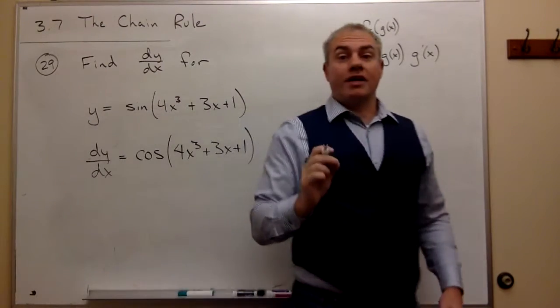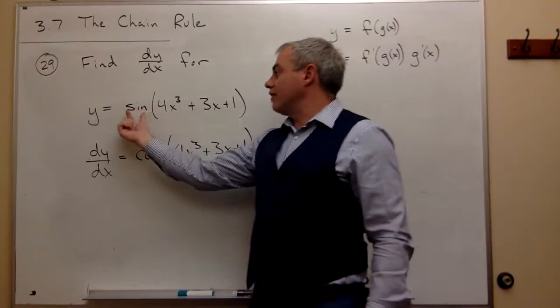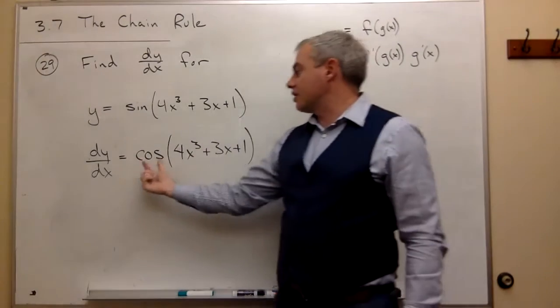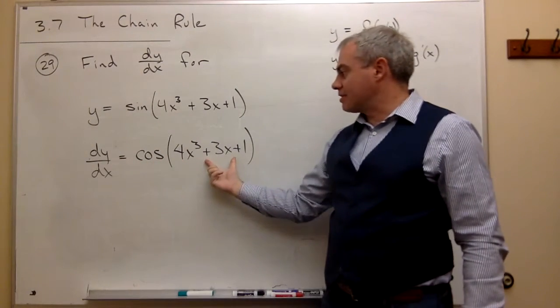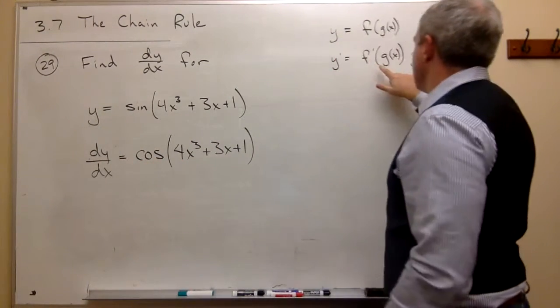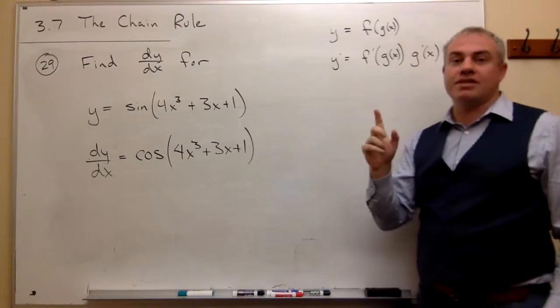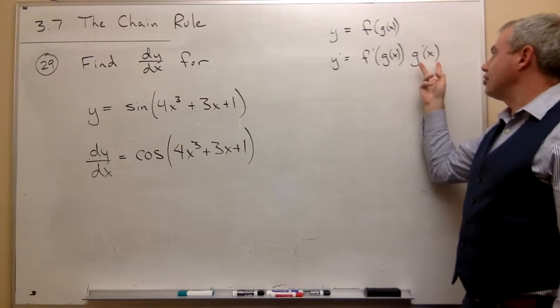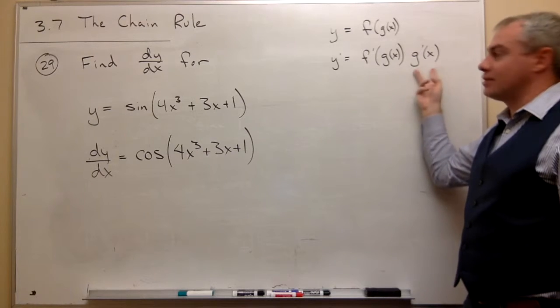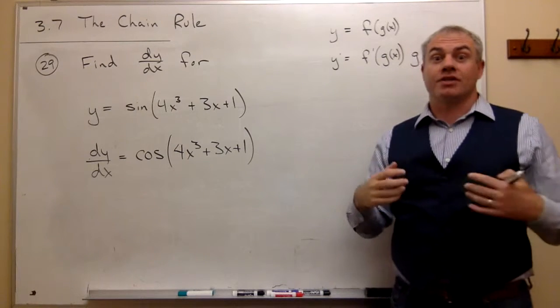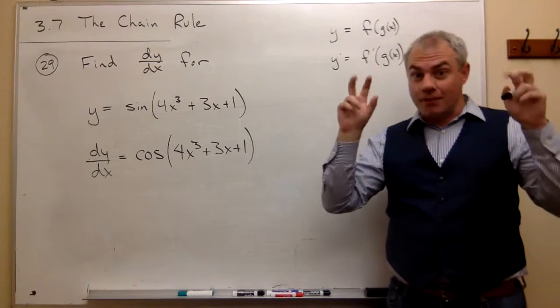But we're not quite done. So I took the derivative of sine of something, and I said it was cosine of that same something. But then what the chain rule says is, wait, there's one more piece to this puzzle. I need to multiply by the derivative of the thing that was inside. Or in other words, what's the derivative of the something?